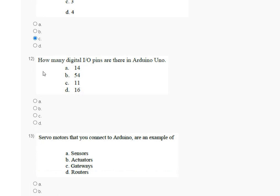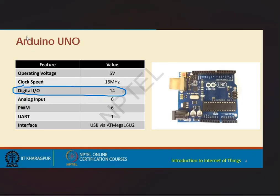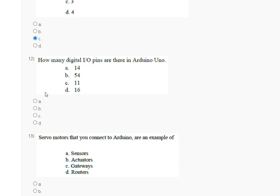Question number 12: how many digital input/output pins are there in Arduino Uno — first 14, second 54, third 11, fourth 16? The digital input/output value is 14. So the correct answer for question number 12 is option number A — 14.